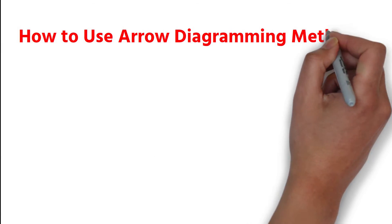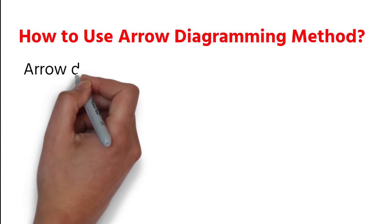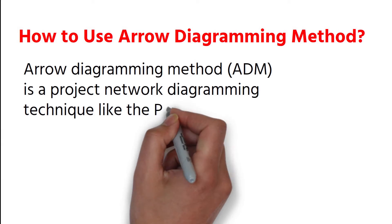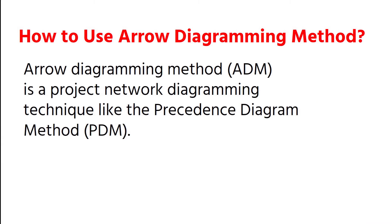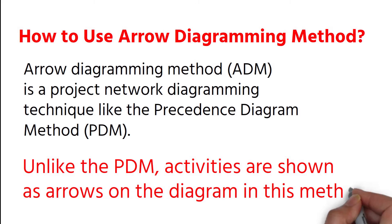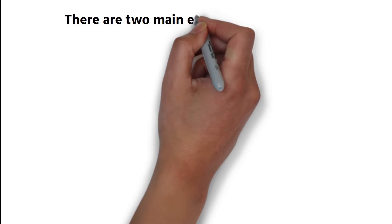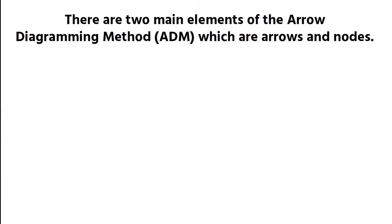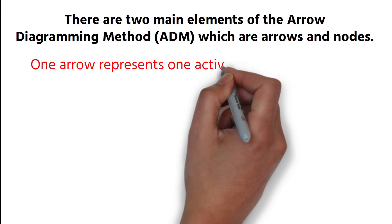How to Use Arrow Diagramming Method. Arrow diagramming method is a project network diagramming technique like the Precedence diagram method. Unlike the PDM, activities are shown as arrows on the diagram in this method. There are two main elements of the arrow diagramming method which are arrows and nodes. One arrow represents one activity to be performed.